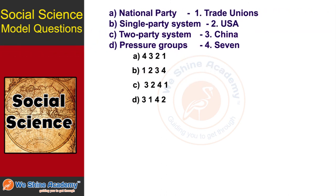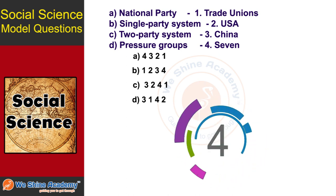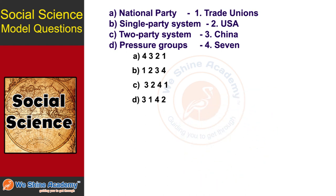The next matching question gives these options: Option A — National Party: Seven; Option B — Single Party System: China; Option C — Two Party System: USA; Option D — Pressure Groups: Trade Unions. The correct matching answer is Option A: National Party — Seven; Single Party System — China; Two Party System — USA; Pressure Groups — Trade Union.